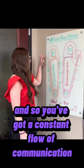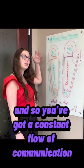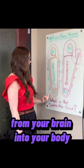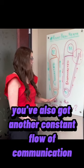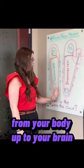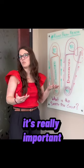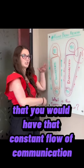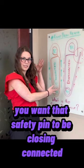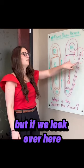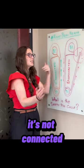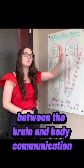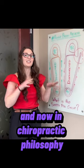You see these arrows, and so you've got a constant flow of communication from your brain into your body. You've also got another constant flow of communication from your body up to your brain. It's really important that you have that constant flow of communication — you want that safety pin to be closed and connected. But if we look over here, it's not connected, and so that means there's an interruption between the brain and body communication.